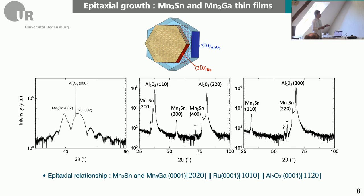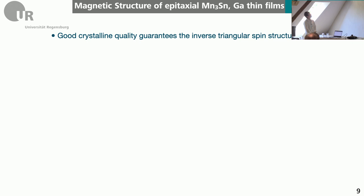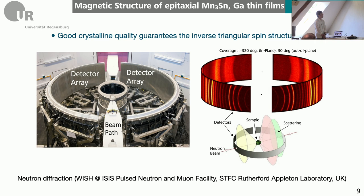However, this doesn't assure that you have an inverse triangular spin structure just because you have an epsilon phase crystalline structure. So we brought the sample to the neutron diffraction facility in the UK, called ISIS. You can actually measure neutron diffraction patterns covering almost 320 degrees in-plane and also 30 degrees out-of-plane.